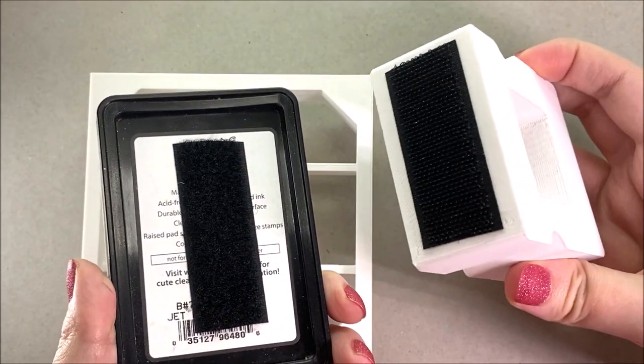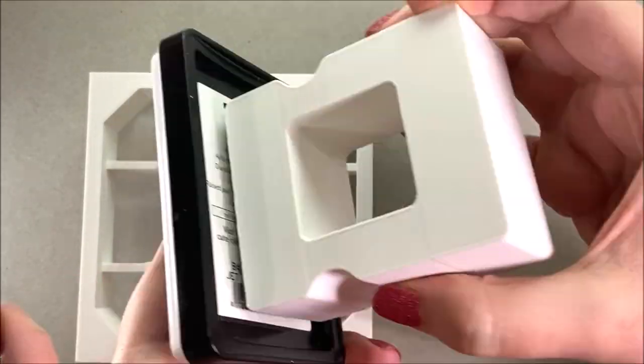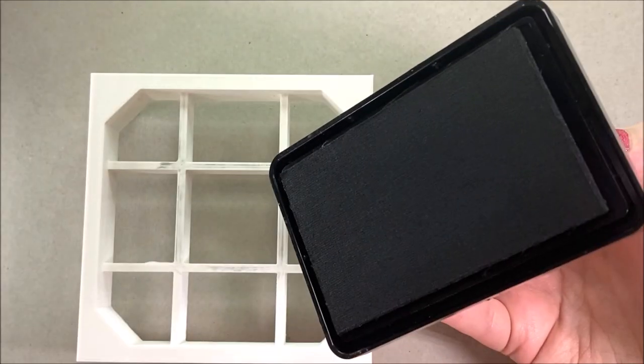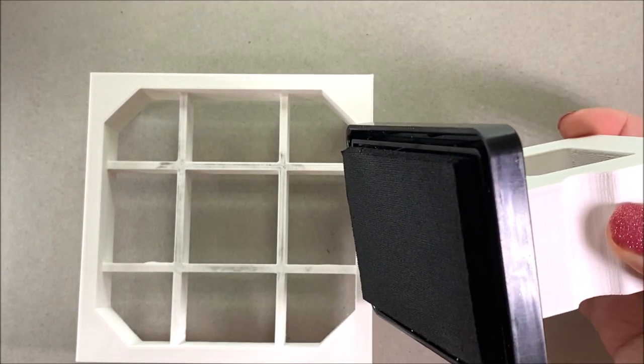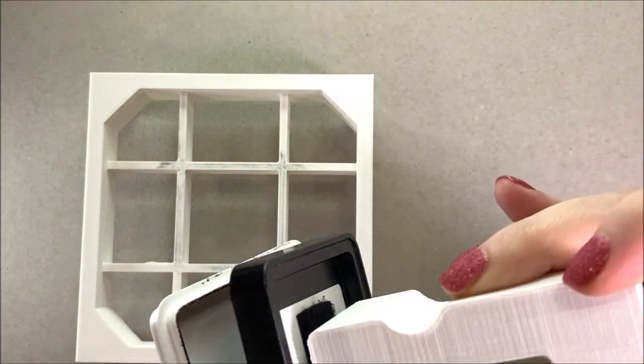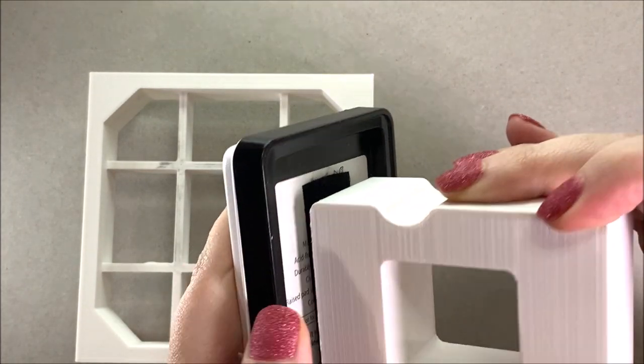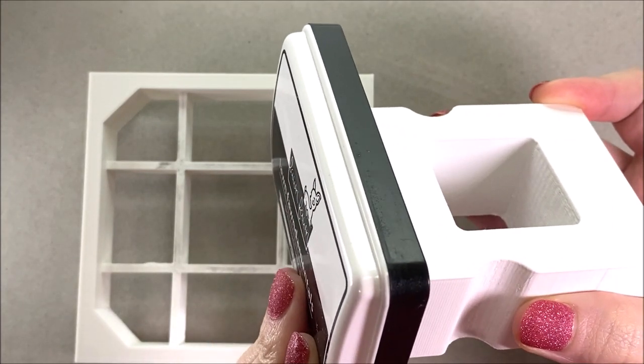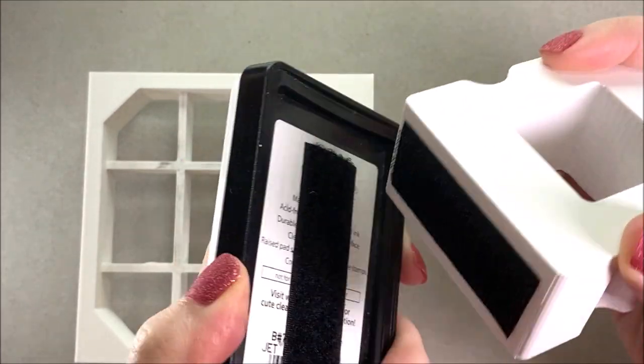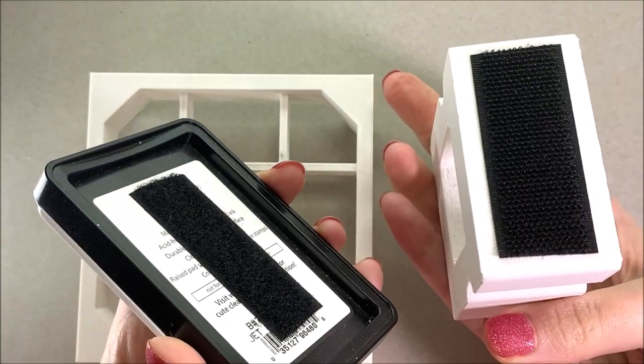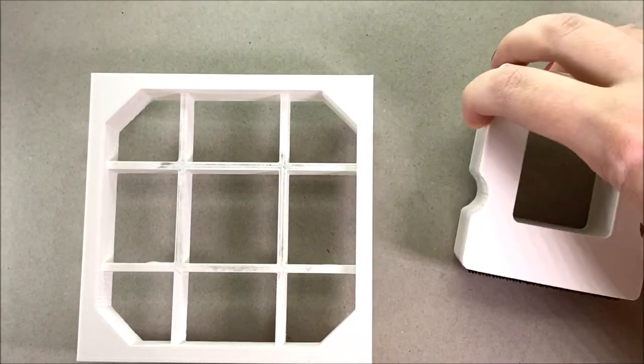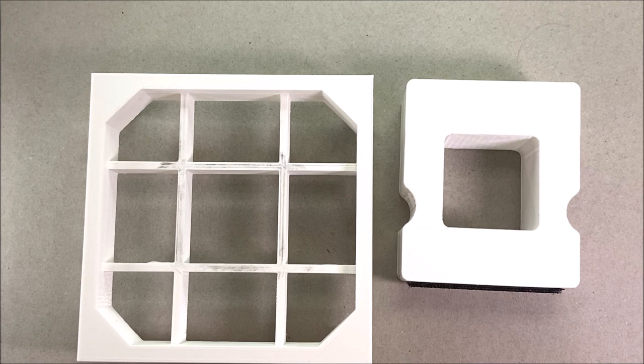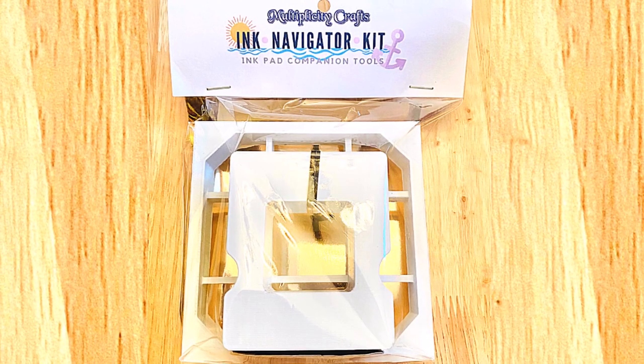It's flat for storage. You don't have the tool permanently affixed. It's temporary and you can change ink pads very easily. Again, we do have the refill strips available if you need additional strips for additional ink pads. You can see how nicely this holds the ink. When you're done, pop your lid on, pull it away from the ink navigator tool and you're good to go. This is great for your ink storage because it doesn't add any bulk. So there is the brand new Multiplicity Crafts ink navigator kit. What do you guys think?